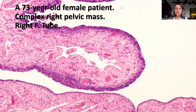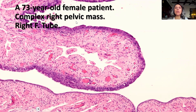This is a case of a 73-year-old female patient who presented with abdominal pain and distension and was found to have a complex right pelvic mass. Hysterectomy and bilateral salpingo-oophorectomy was performed. This section is actually from the right Fallopian tube.